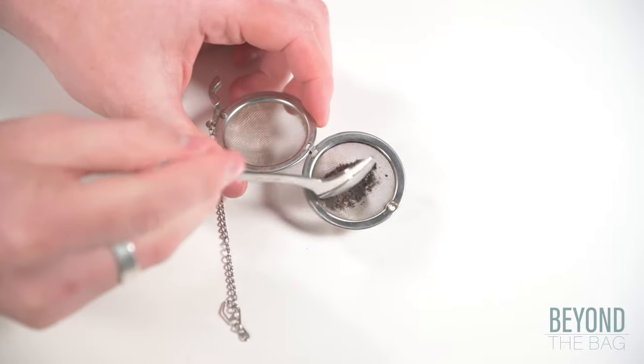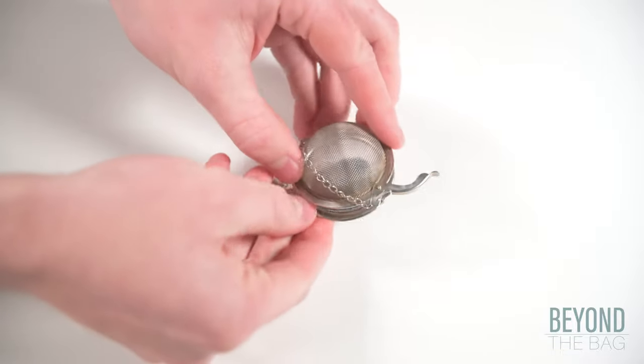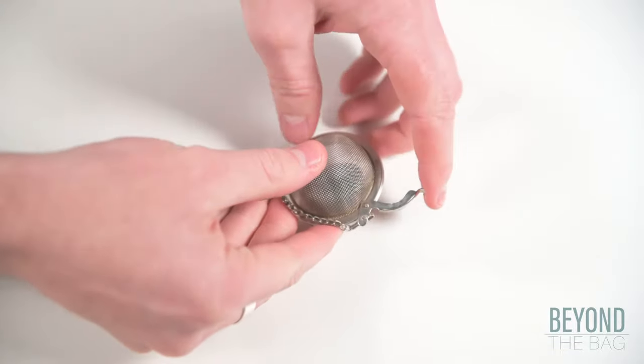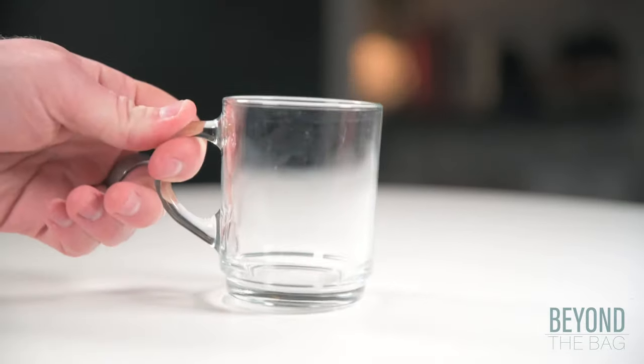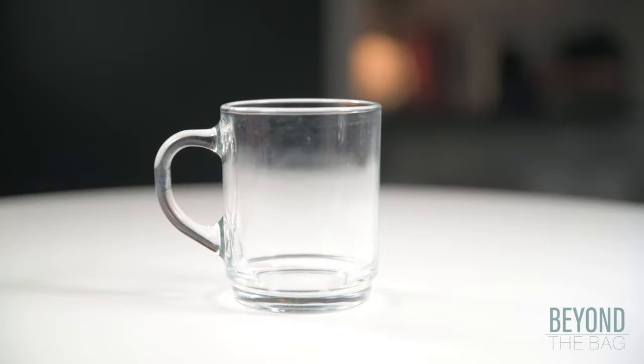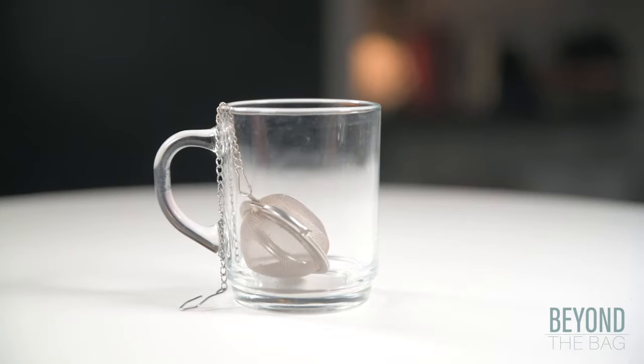To use, load whatever kind of loose leaf tea your heart desires into the ball and close it with the clasp. Place the tea ball in a cup or mug and add hot water.